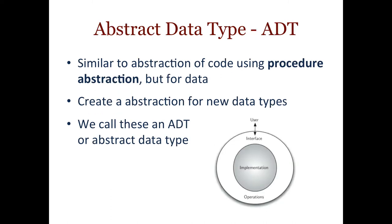That's going to be what's called an abstract data type. When we create a new type of data, we're going to use procedural abstraction for the data, but we're going to do it in an object-oriented way — actually doing abstraction through encapsulation in an object. So we create abstraction for new data types, and for a particular data type, that's going to be an abstract data type.